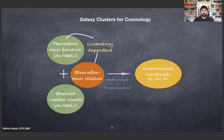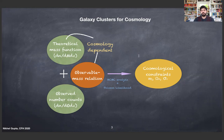In order to compare the theoretical mass function to the observed number counts, you need a way to convert the observable to mass, because you don't directly observe the mass of galaxy clusters. So you need this observable-to-mass relation. Both the theoretical mass function and the observable mass function are cosmology-dependent, and doing MCMC analysis with a likelihood function, you can constrain your favorite cosmological parameters.